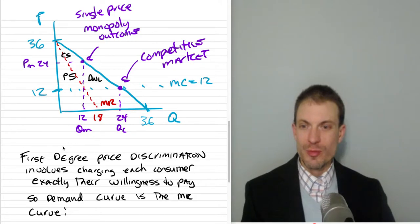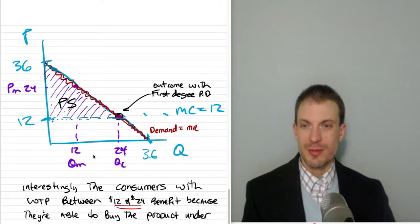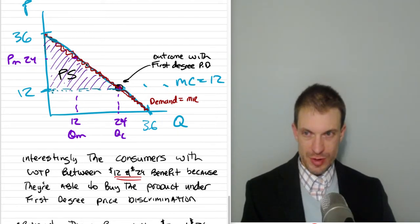contribution to revenue that you're getting from one more unit sold is exactly their willingness to pay. So the demand curve becomes the marginal revenue curve. That's this right here.